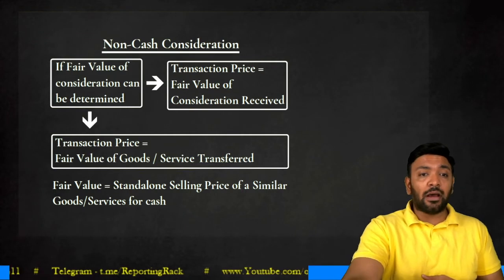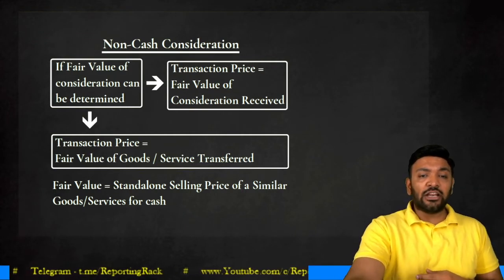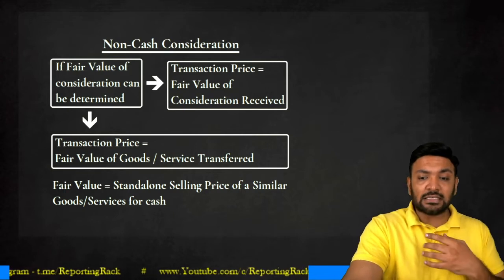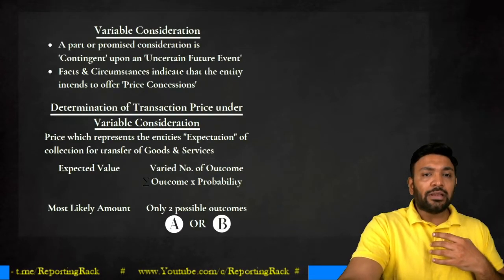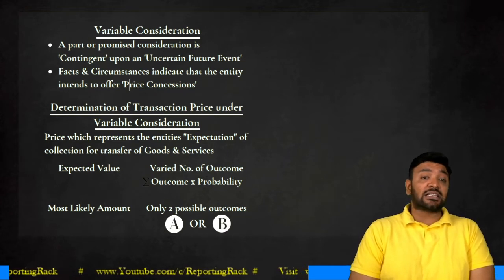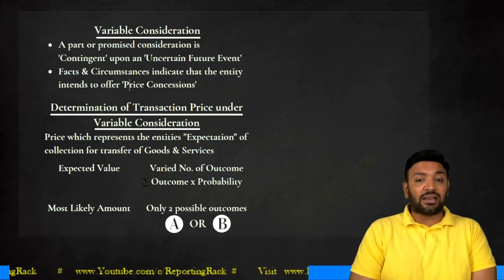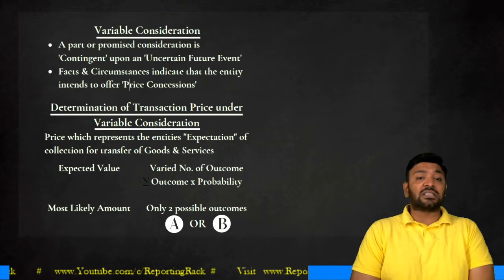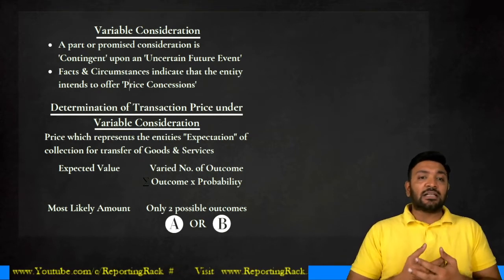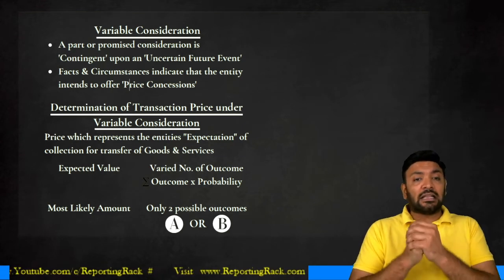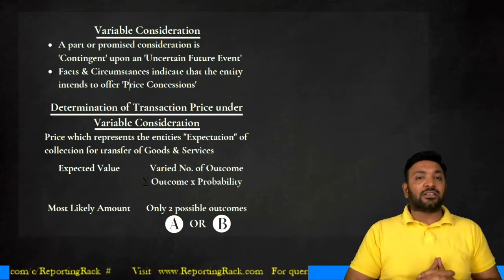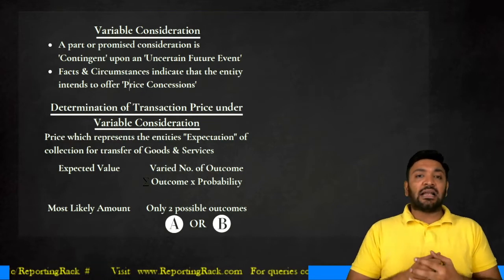Let's continue from where we stopped. I was talking about variable consideration, where a part of the consideration is contingent upon an uncertain future event. The facts and circumstances indicate that there is a price concession whenever there is variable consideration. I'll have to determine the transaction price based on the expectation of the enterprise.